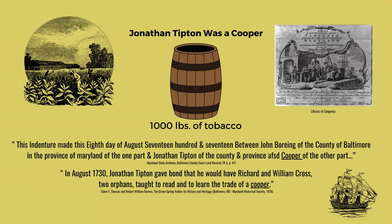Jonathan could have easily learned the cooper trade in Jamaica. Apprenticeships for a cooper were four years, starting boys between the ages of 14 and 17. If he started his apprenticeship in Jamaica at 14 to 17, he was probably 18 to 21 years of age when he left Jamaica for Maryland — still considered a young man, as mentioned in the newspaper article.